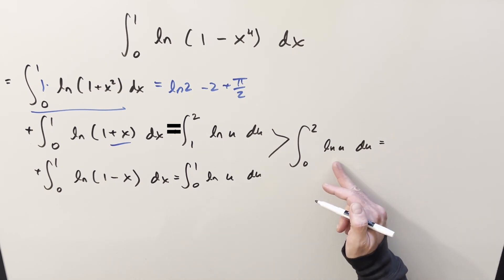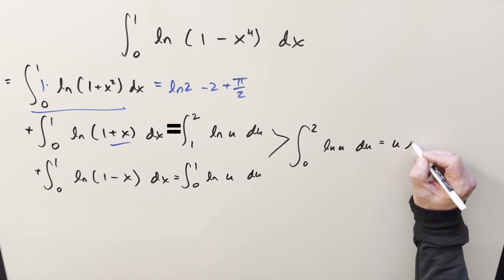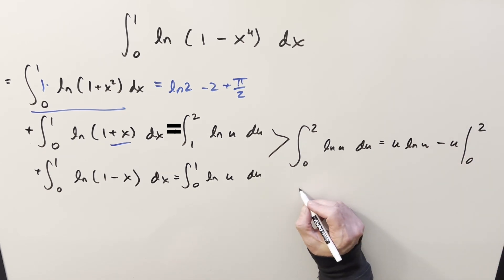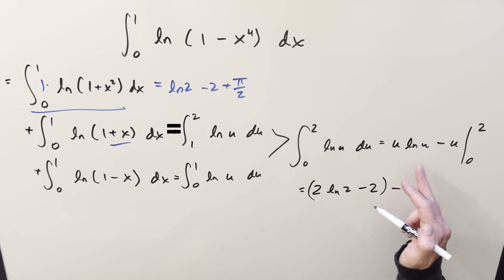Just use the formula on this. Integral of ln u is going to be u ln u minus u evaluated from zero to two. You plug in two, you get 2 ln 2 minus 2, then minus.